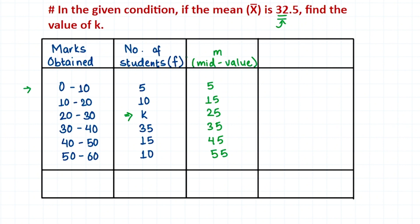Now to find the mean, we multiply f and m to get fm. So 5 times 5 is 25, 10 times 15 is 150, 25 times k is 25k, 35 times 35 is 1225, 45 times 15 is 675, and finally 55 times 10 is 550.